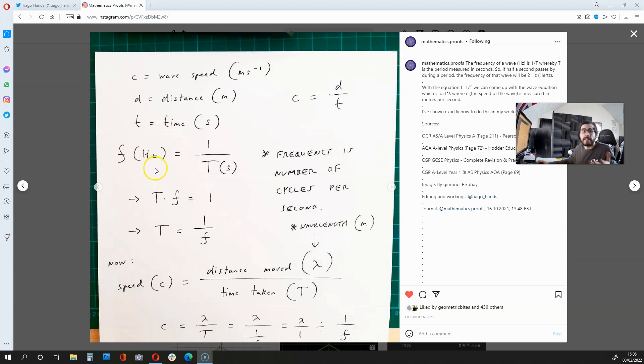Well, firstly, the frequency of a wave measured in hertz is 1 over t, whereby t is the period measured in seconds.